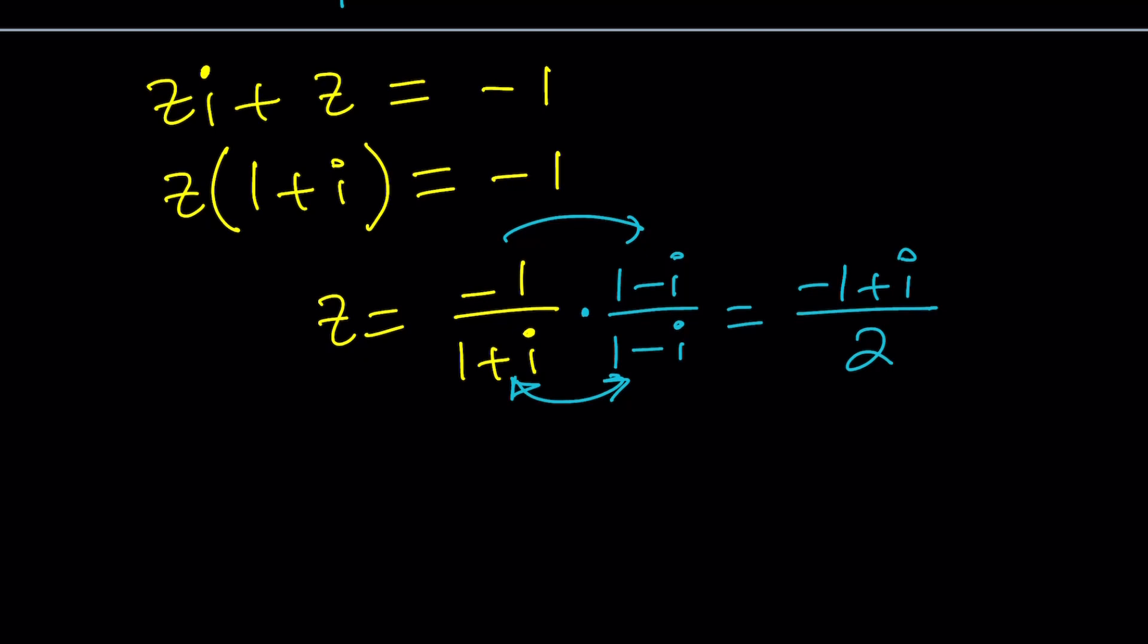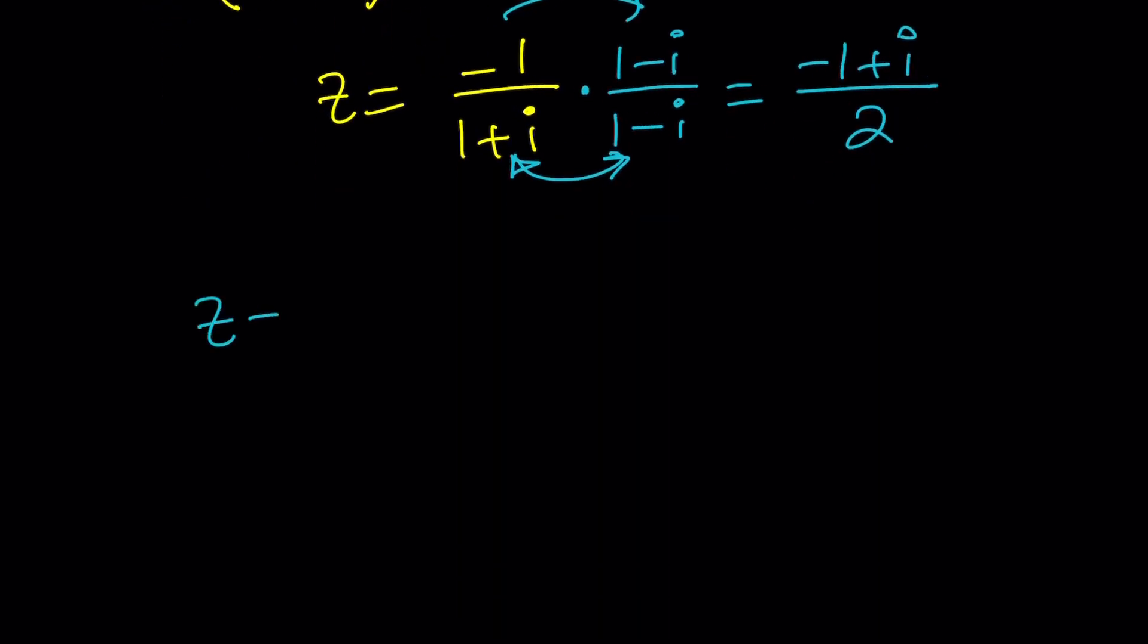Remember when you multiply two conjugates you get a real number and that's actually two. So z can be expressed as follows, or you can also write it as, if you want, if you're really picky about this, negative one half plus one half i, so the real part and the imaginary parts are visible.